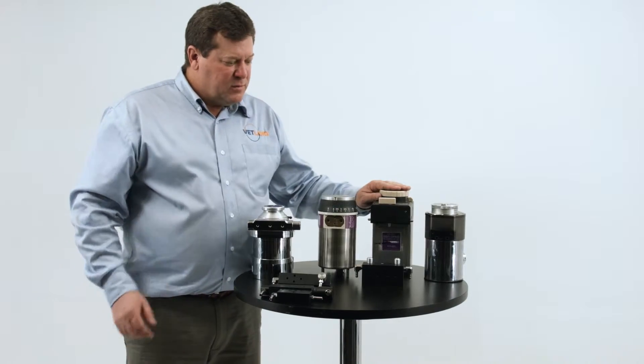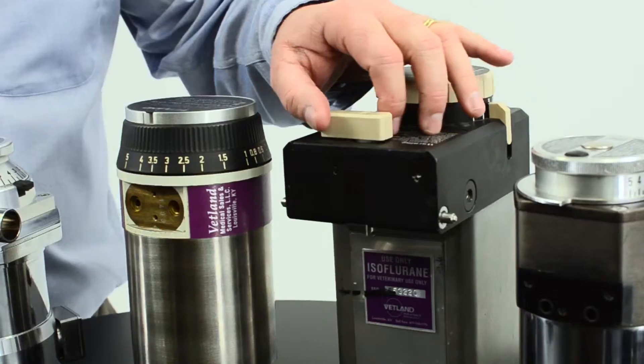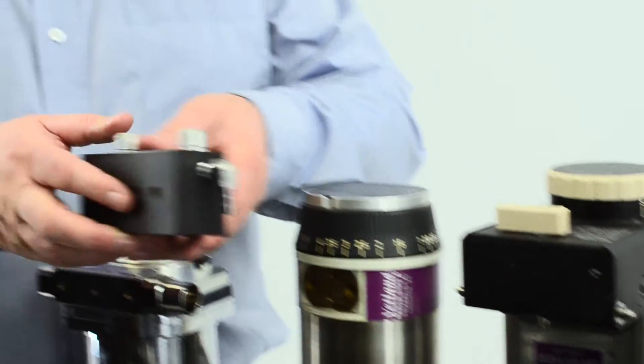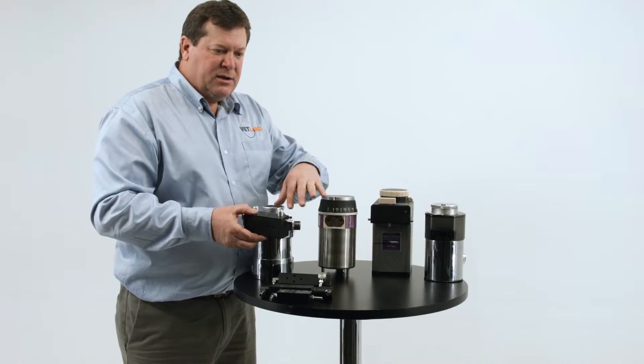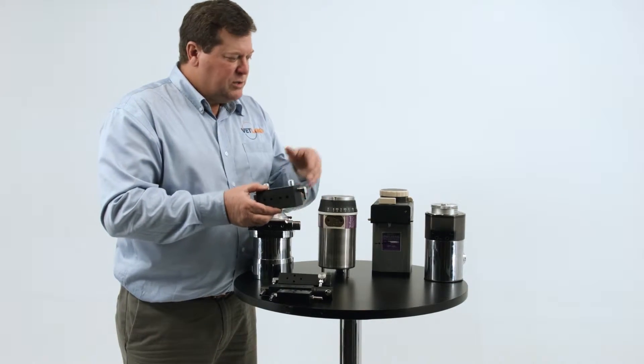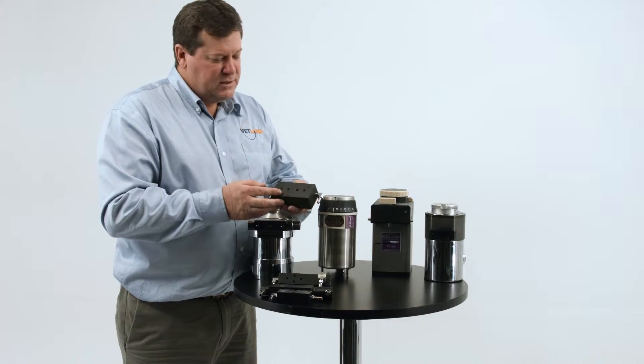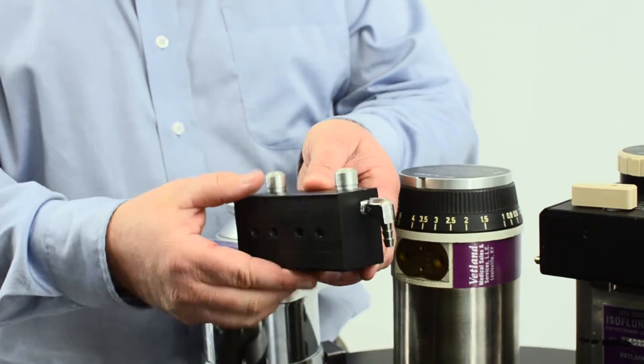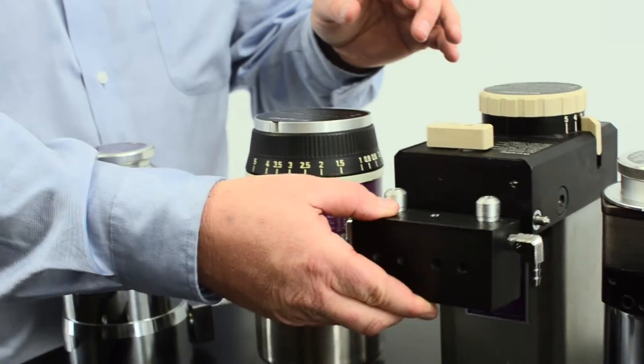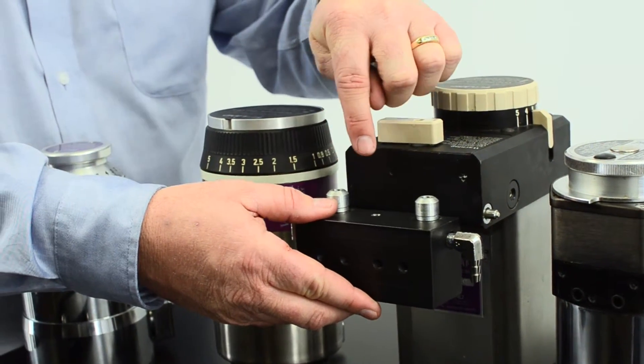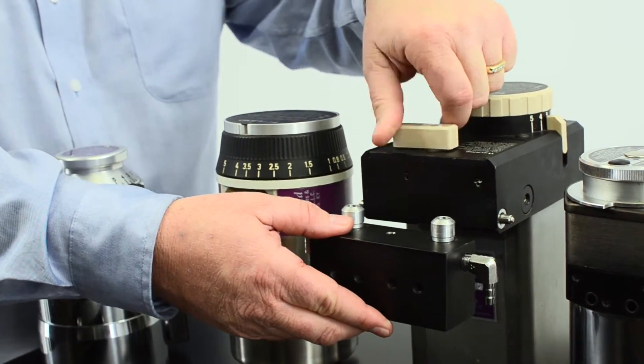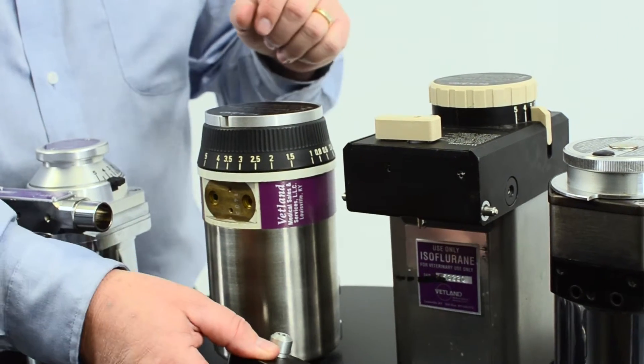On the TEC-4 vaporizer, because it's a latching vaporizer made to be interchanged, taken off easily and changed from one drug to another. For instance, you have a block like this with two posts that the vaporizer sits on and it can either be bolted in place or it can be latched in place. This is the TEC-4 manifold.